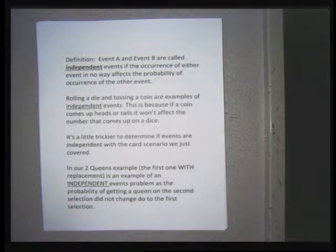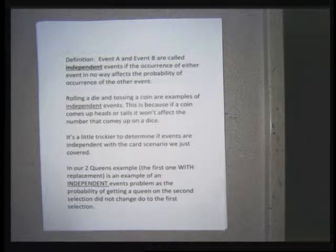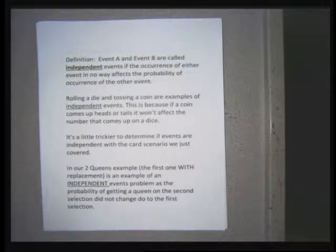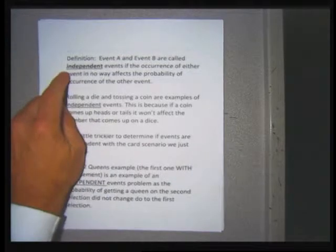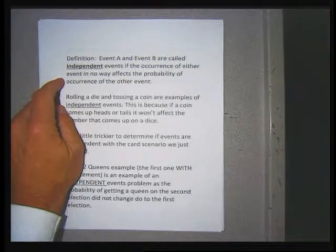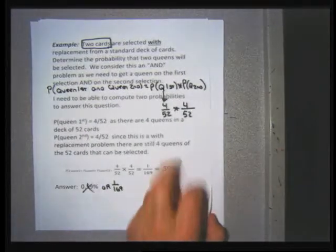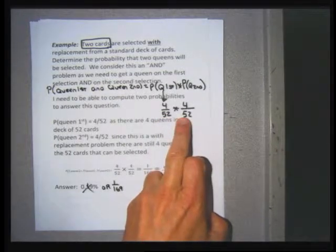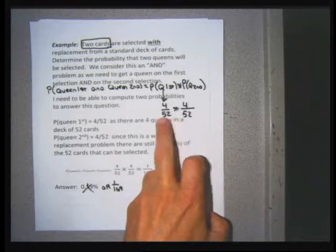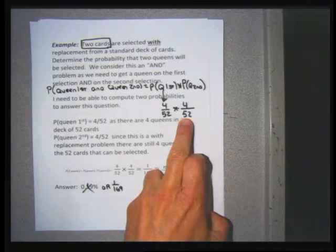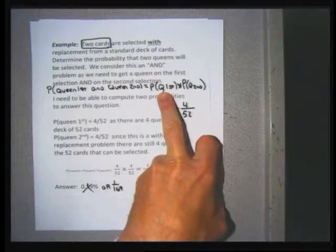There's another term on this page — it's not terribly important in terms of doing the homework, but it fits in this section. Two events are called independent if one occurring doesn't affect the probability of the other. In the first queen problem, the events were independent because the probability of getting a queen on the second draw was the same as on the first — it didn't change. These are independent events because the probability of getting a queen second was not impacted by getting a queen first.